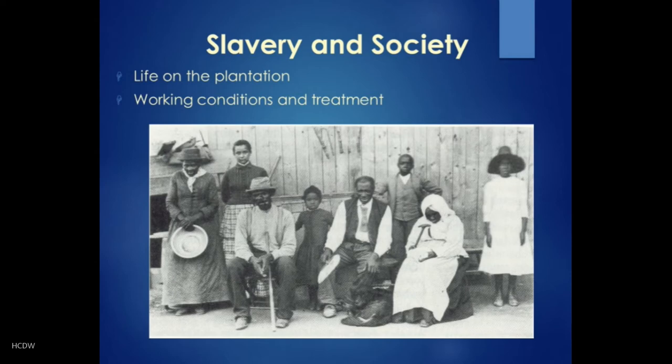Slaves working in rice fields had perhaps the toughest conditions, forced to stand all day in water sometimes up to their knees. Slave homes were typically crude log cabins, usually with a dirt floor and cracks in the walls that let in heat, cold, and mosquitoes. Their diet was repetitive and left many malnourished — mostly salt pork or bacon and cornbread, every now and then with molasses if they were lucky. Female slaves had things particularly rough because they did much of the same work as men in the fields and yet were also expected to cook, sew, and care for children after hours.